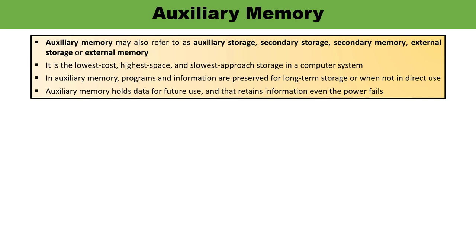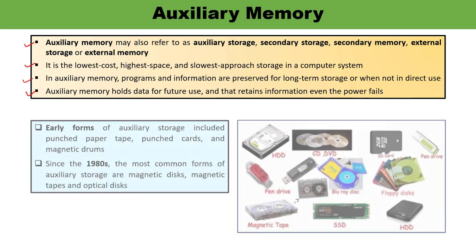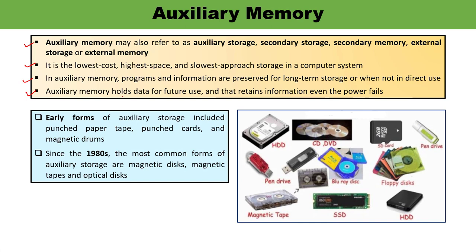Auxiliary memory is the lowest in cost, highest in space, and slowest storage approach in any computer system. It can store programs and information for a long time, even for future storage. It is non-volatile, meaning it retains information even when power is switched off. It is also known as secondary storage, secondary memory, auxiliary storage, external memory, or external storage. Early forms include punched paper tape, punched cards, and magnetic drums. Since the 1980s, popular forms are magnetic disk, magnetic tape, and optical disk.